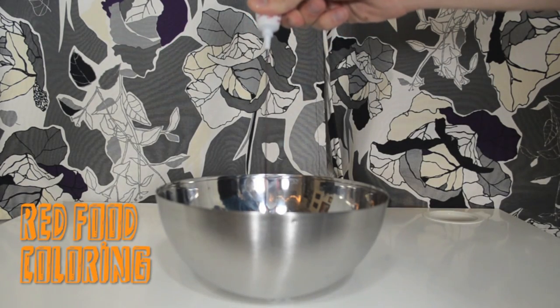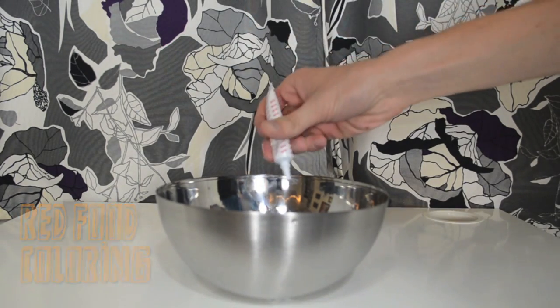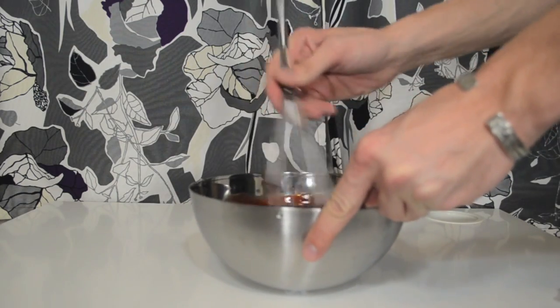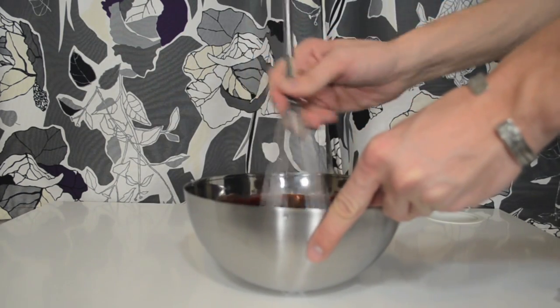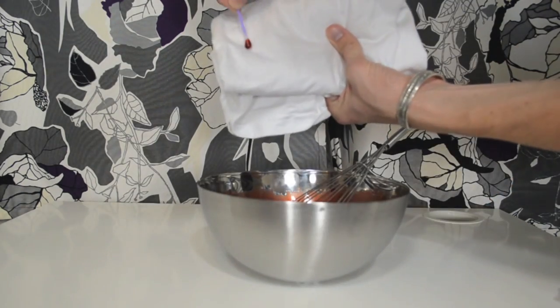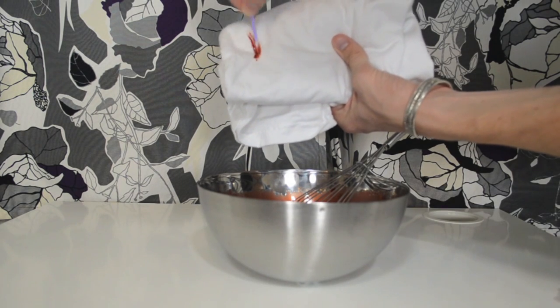Then keep adding red food coloring and mixing it together until you get the desired color. For stage you'll want a color that is more brown than red because from far away that will read as blood whereas anything very red will be kind of fake looking.